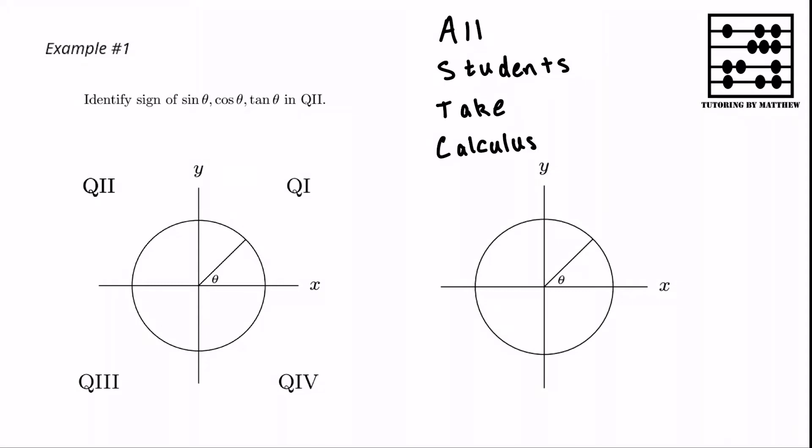Next we label the quadrants in order with letters ASTC. But what do these letters represent? Well they tell us which trig functions are positive.